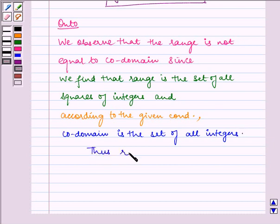Thus range is not equal to codomain. Therefore, f is not onto.